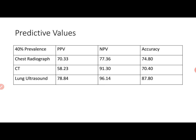When looking at 40% prevalence, we see that positive predictive values have moved up, changes in negative predictive value, and the accuracy has changed as well. The accuracy of CT, for example, has moved from 63.20 to 70.40. None of these three test modalities, even at 40% prevalence, has a very good accuracy. Lung ultrasound is 87.80, but we need to consider that was just one study — with only one study, it's difficult to generalize for any practical purpose.